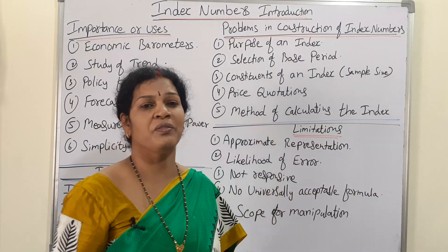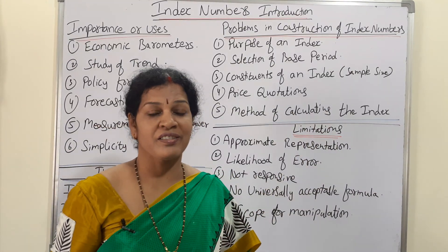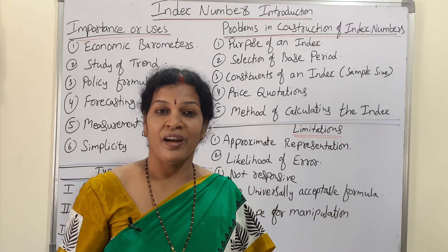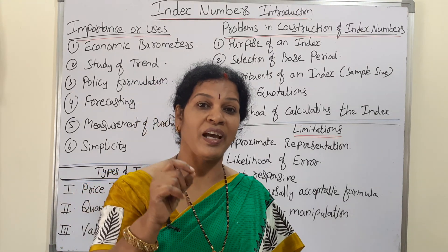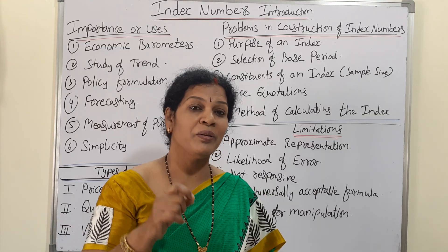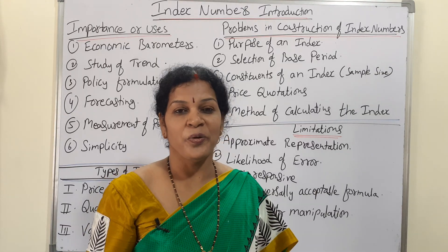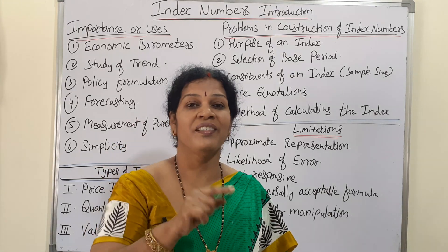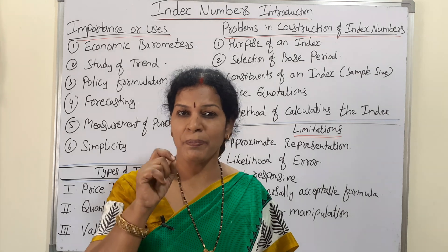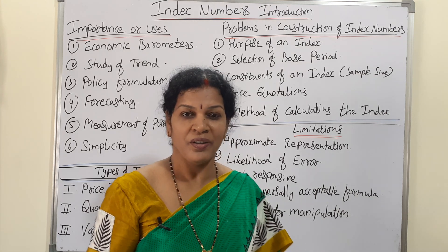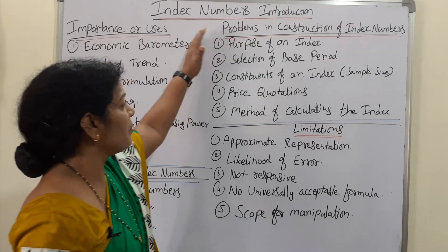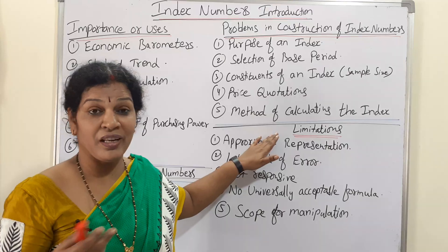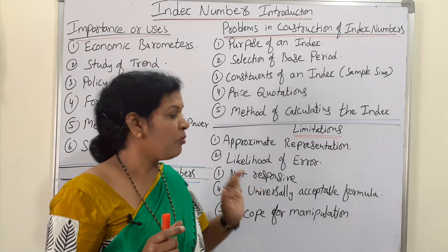The fifth problem is the method of calculation of index numbers, which is one of the most difficult tasks. There are many methods and many formulas. Unless the person calculating index numbers has very good knowledge, there is no use in calculating. We have a calculator, we have the problem, but what method is required, which method to be chosen for the purpose of calculation — that is one of the key drawbacks.